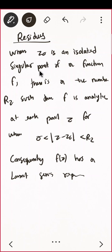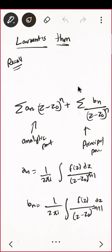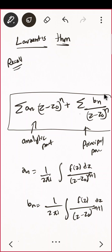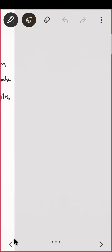Note that z₀ was the isolated singularity, and the definition of isolated singularity says the function is analytic in some neighborhood. This was actually the condition for Laurent series expansion — if z₀ is a singular point, you can still find a Laurent series. This is different from power series: power series requires analyticity everywhere, but Laurent series may or may not be analytic around z₀. Laurent series is a special case focused on singularities.